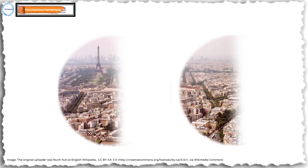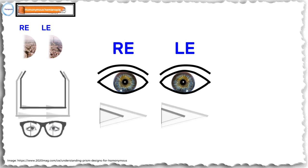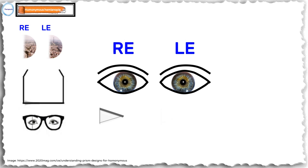Coming to other uses: this is a right homonymous hemianopia as seen by the patient. Prisms may be used in several ways. Yoked prisms may be used with the base towards the hemianopic side — in this case, the right side — which allows the field to be shifted a little so that there is a little more of the right field seen; however, there is no field expansion. Alternatively, yoked sector prisms, where the prism is present only on one half of the glasses, may be used, producing a similar effect, but an apical scotoma can hamper vision in some fields.